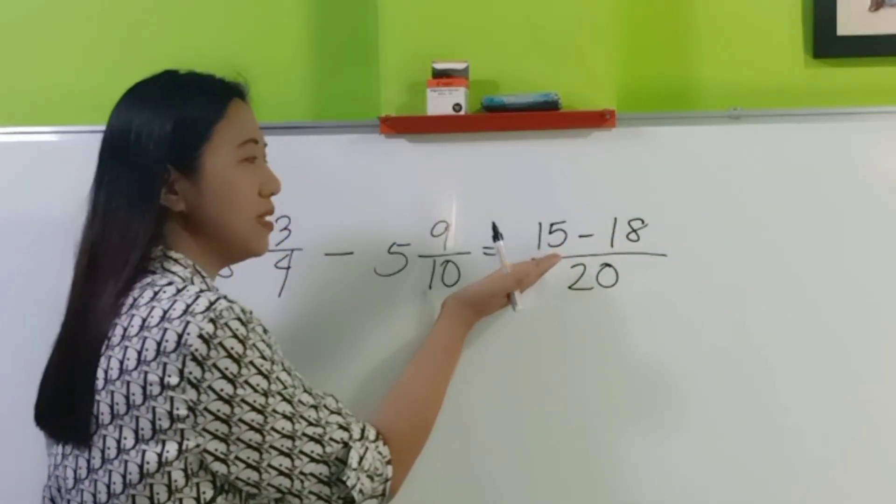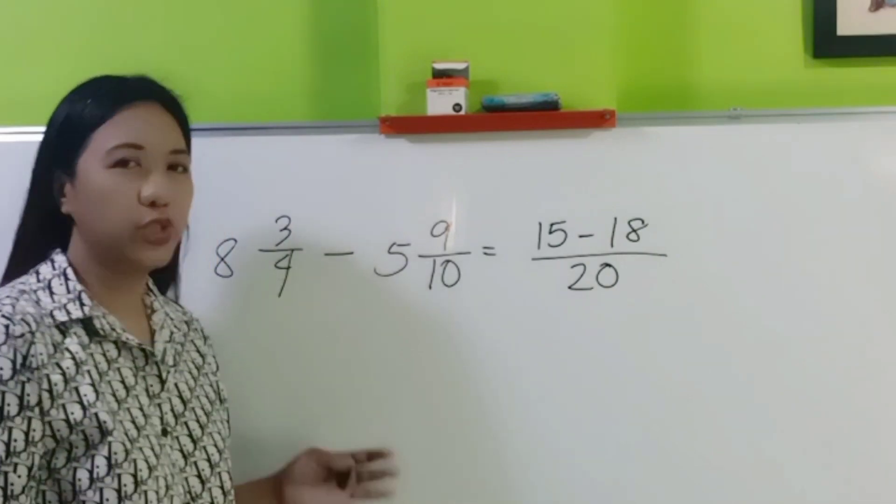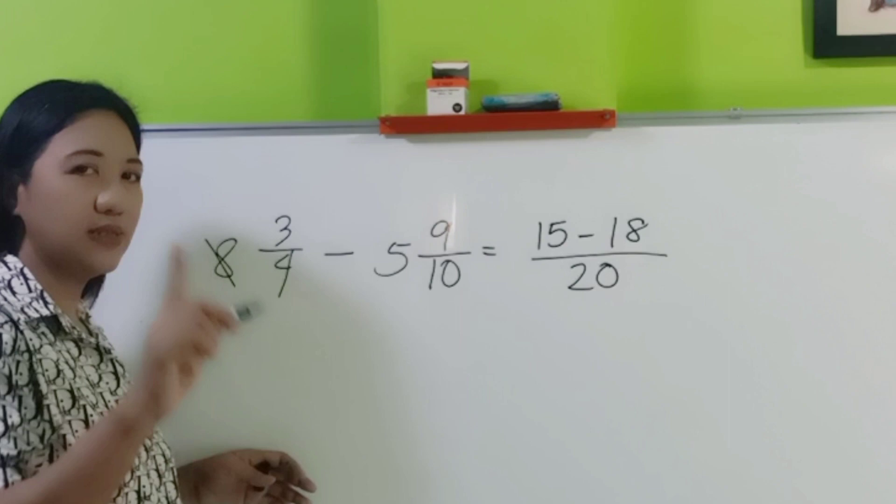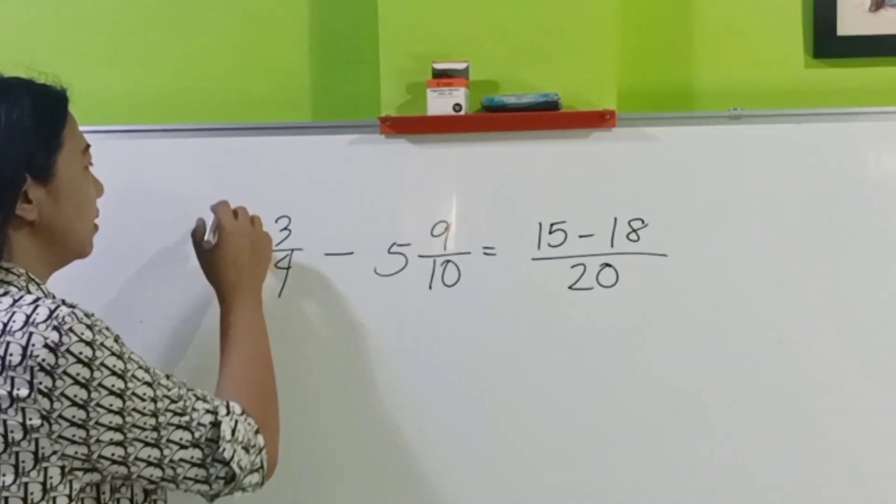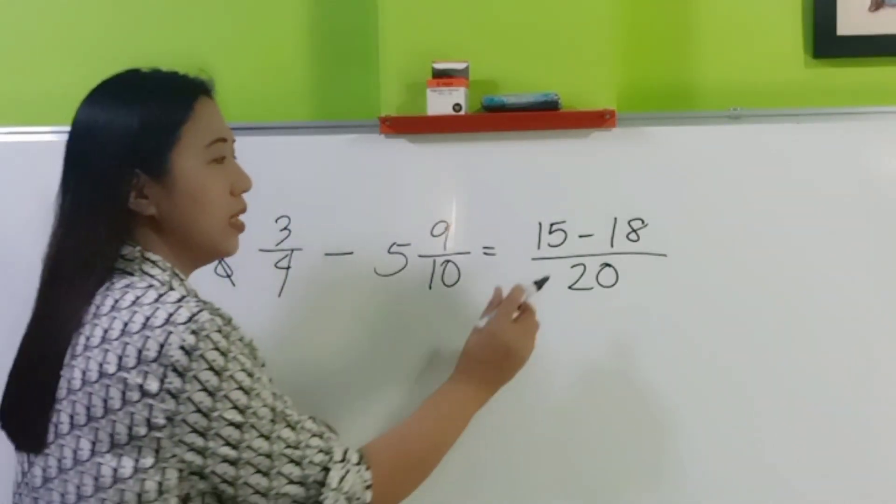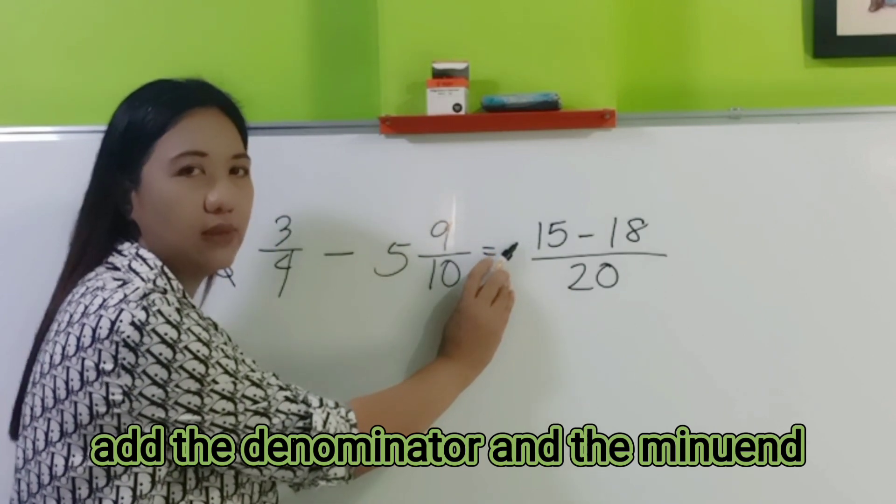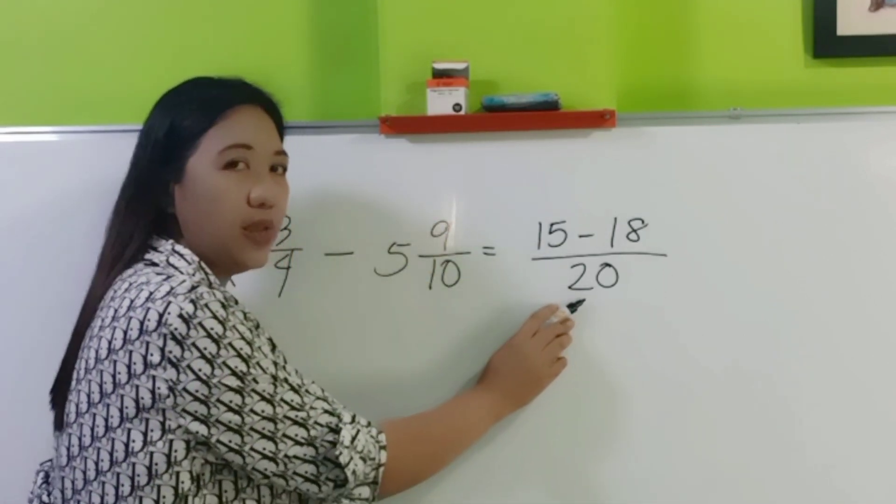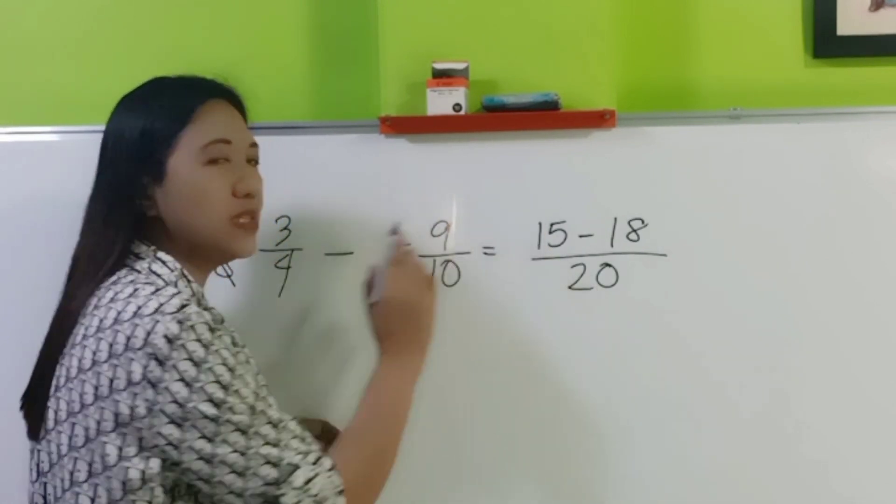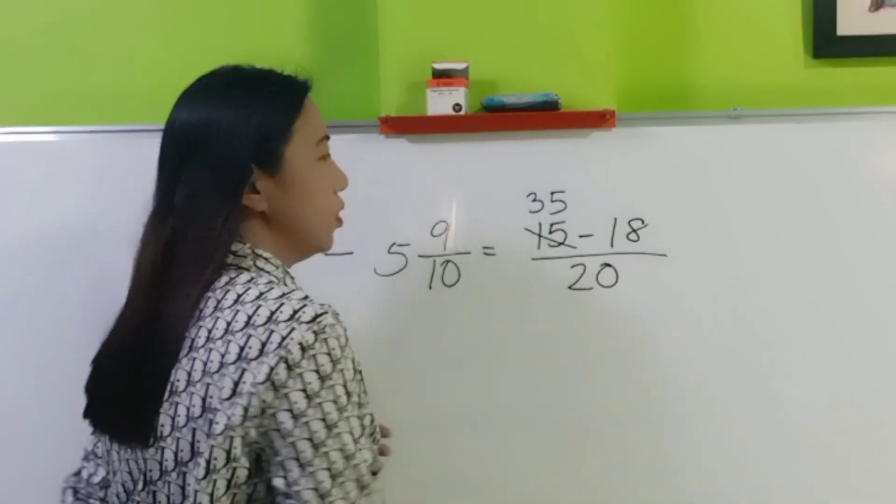The minuend is smaller again than the subtrahend. So the shortcut here is, automatically, subtract 1 from this 8. So 8 minus 1 is 7. Watch. Just add the denominator and the minuend. Let me repeat. Add the denominator and the minuend. So 20 plus 15 is now 35.